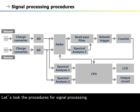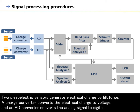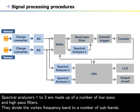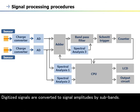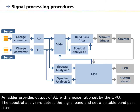Let's look at the procedures for signal processing. Two piezoelectric sensors generate electrical charge by lift force. A charge converter converts the electrical charge to voltage, and an AD converter converts the analog signal to digital. Spectral analyzers 1, 2, and 3 are made up of a number of low-pass and high-pass filters. They divide the vortex frequency band into a number of subbands. Digitized signals are converted to signal amplitudes by subbands. An adder provides output with a noise ratio set by the CPU. The spectral analyzers detect the signal band and set a suitable band-pass filter.